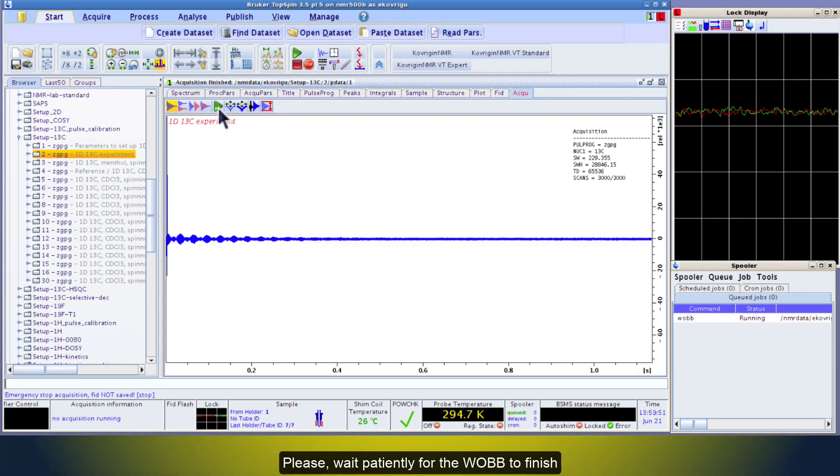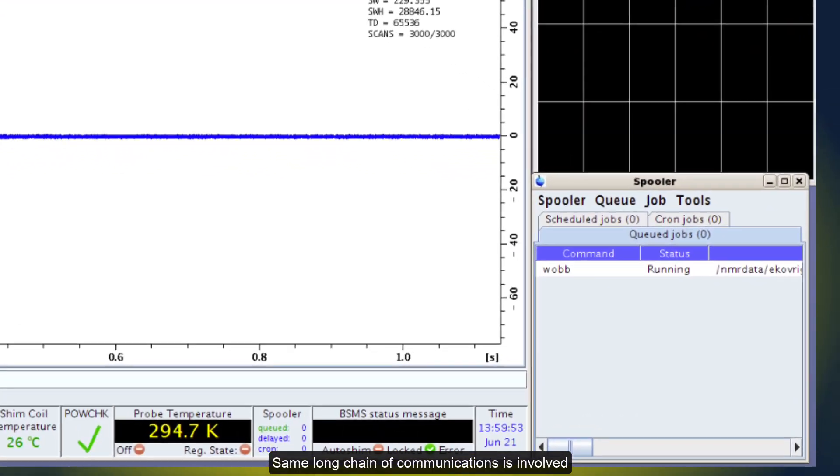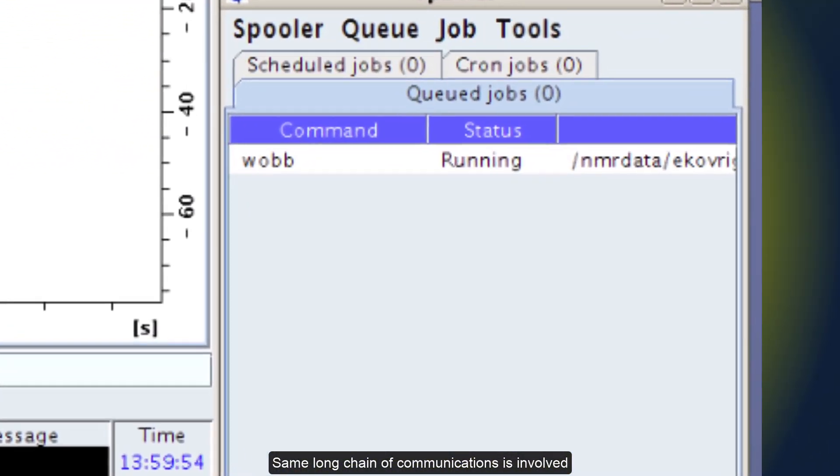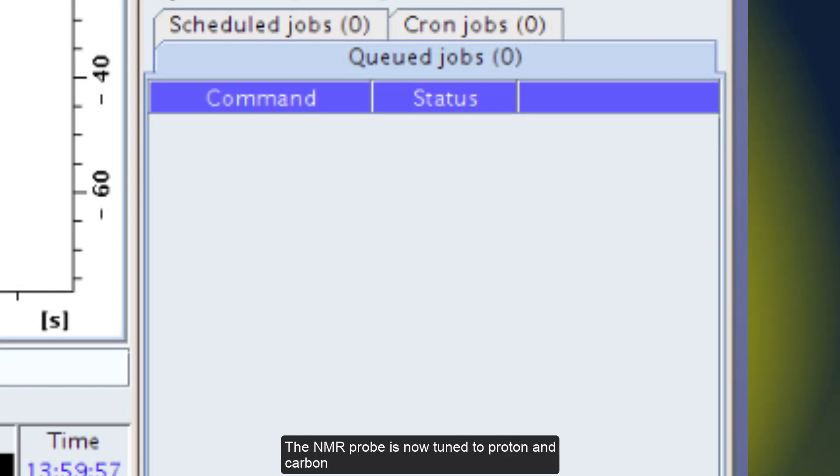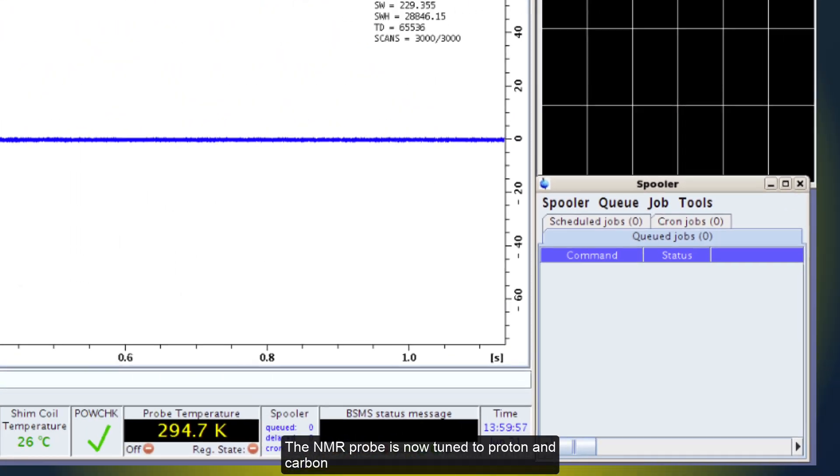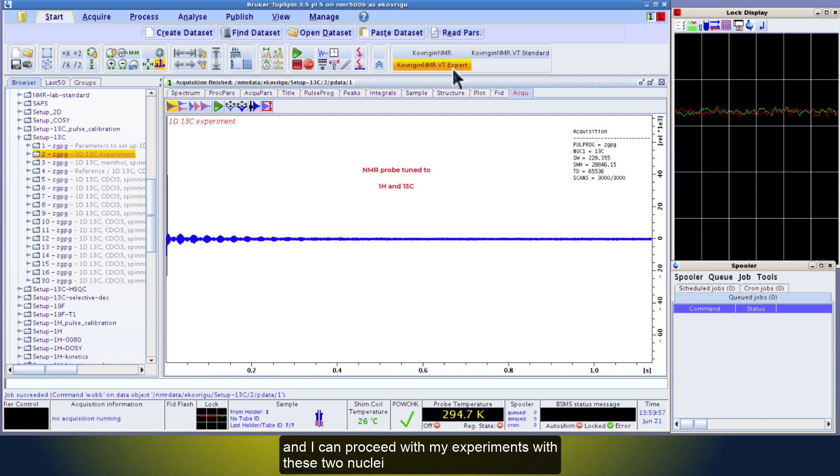Please wait patiently for the Wob to finish. Same long chain of communications is involved. In a few moments, the spooler window becomes empty. The NMR probe is now tuned to Proton and Carbon, and I can proceed with my experiments with these two nuclei.